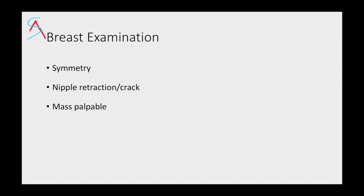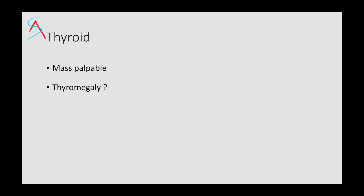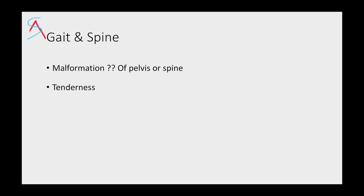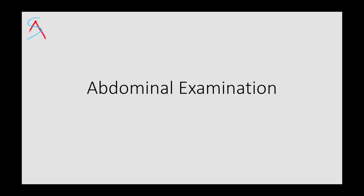In breast examination, check whether the breast is symmetrical or asymmetrical, and look for any nipple retraction. It is important to know about nipple retraction because if the nipple is retracted, it would be very difficult to feed the baby after birth — so teach the patient how to mechanically evert the nipple, or look for any palpable mass. In thyroid, look for thyromegaly — mild thyromegaly can be normal in pregnancy. Look for any palpable mass. Then examine the gait and spine — look for any pelvic or spinal malformation or tenderness.